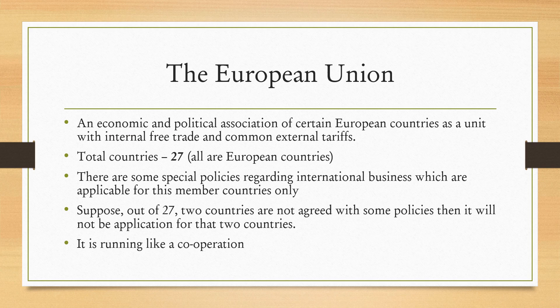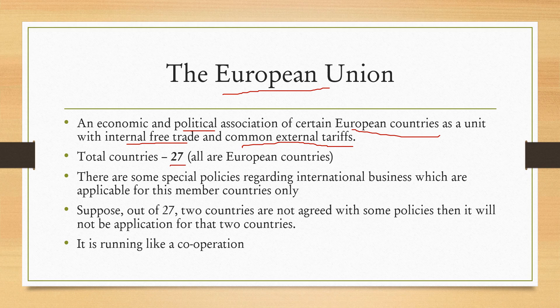The next topic is the European Union. The European Union is an economic and political association of certain European countries as a unit, with internal free trade and common external tariffs. In this union there are a total of 27 countries, all European. There are some policies regarding international trade which are applicable to member countries only. If two out of the 27 countries are not agreed with some policies, then those policies will not be applicable to those two countries. It operates like a cooperation.